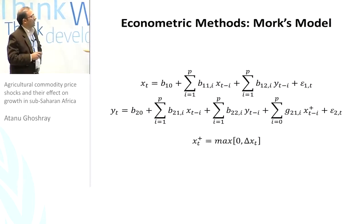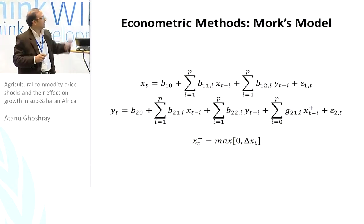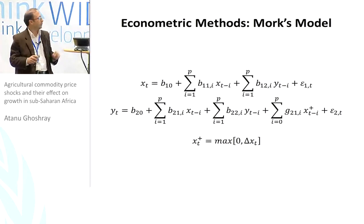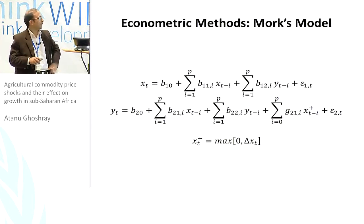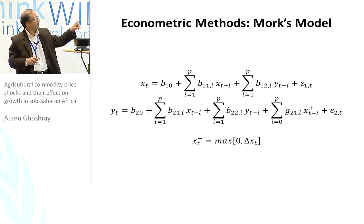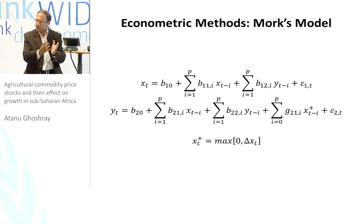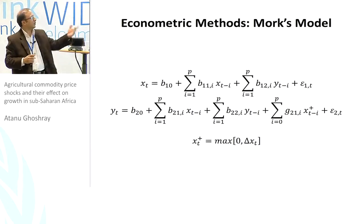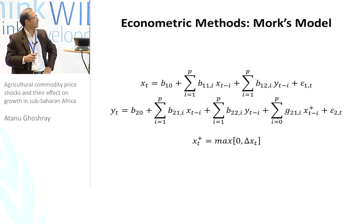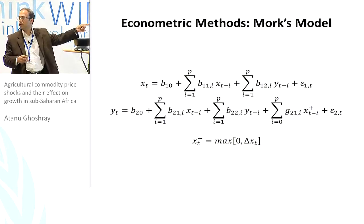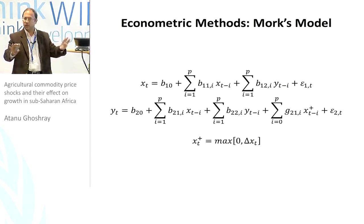We introduce an extra term XT+, which is the Mork-type model — specifically borrowing from Killian and Vigfusson, published in Quantitative Economics 2011. The coefficient G21 on XT+ senses out positive changes in commodity prices; if those coefficients are significant, the positive commodity price shock has a causal effect on GDP measured by Y. The coefficient B21 in the second equation picks up the negative shock, thereby separating positive and negative shocks.